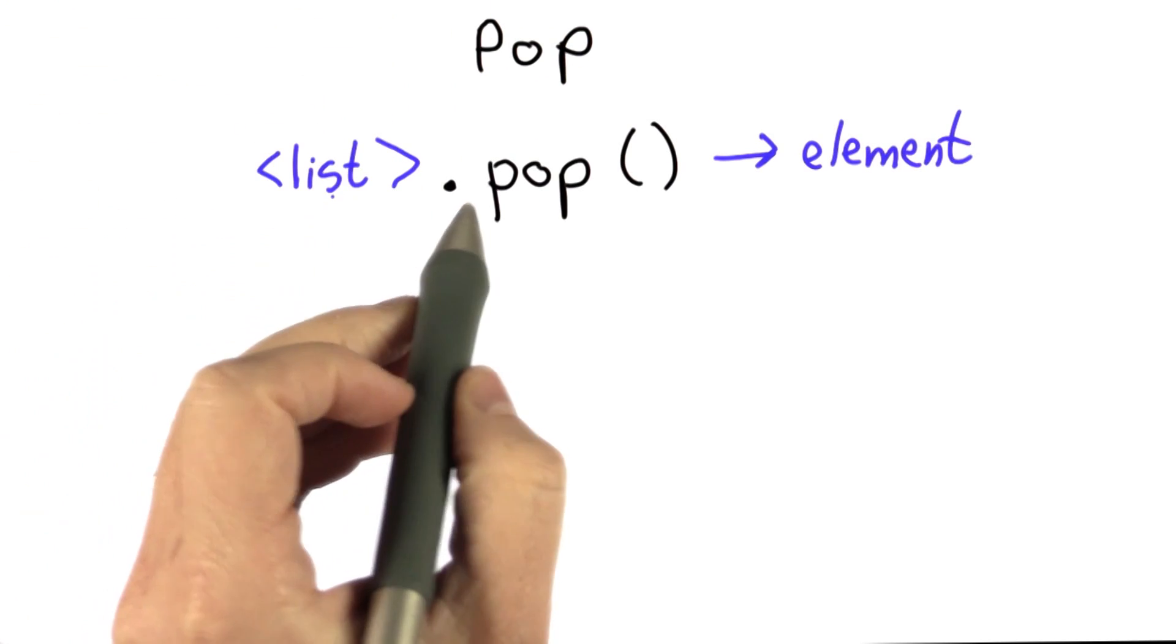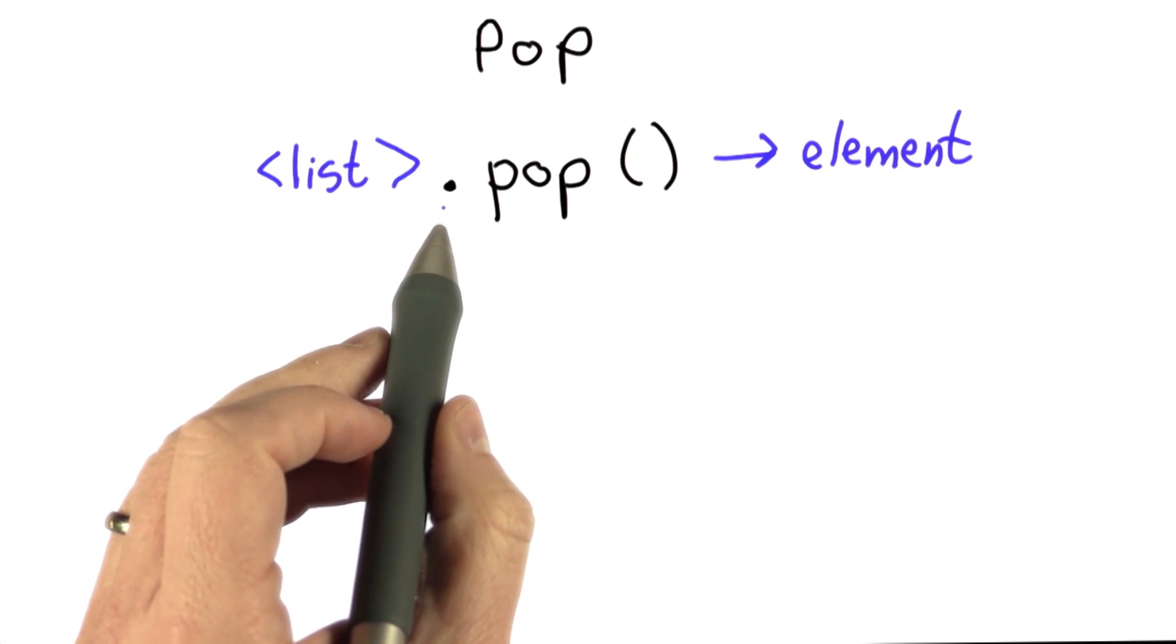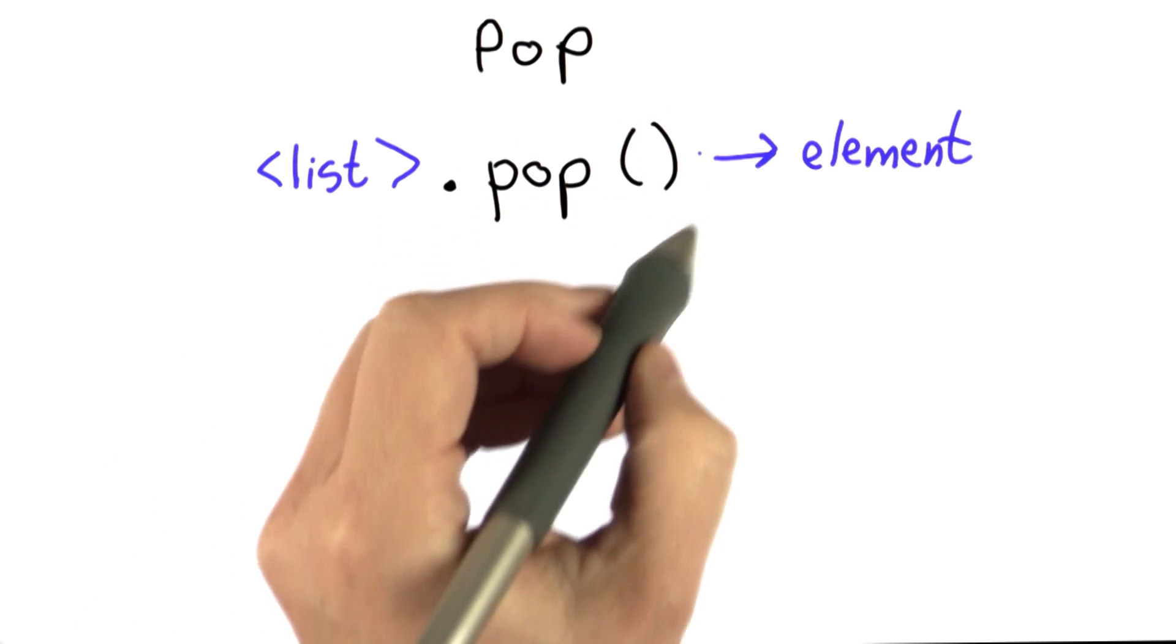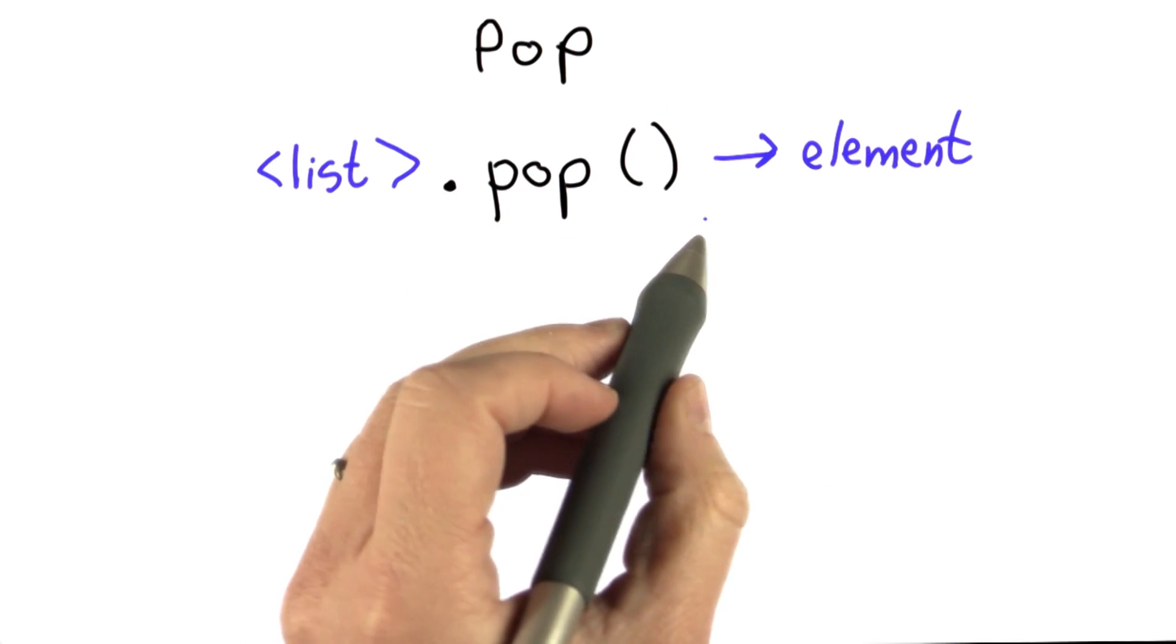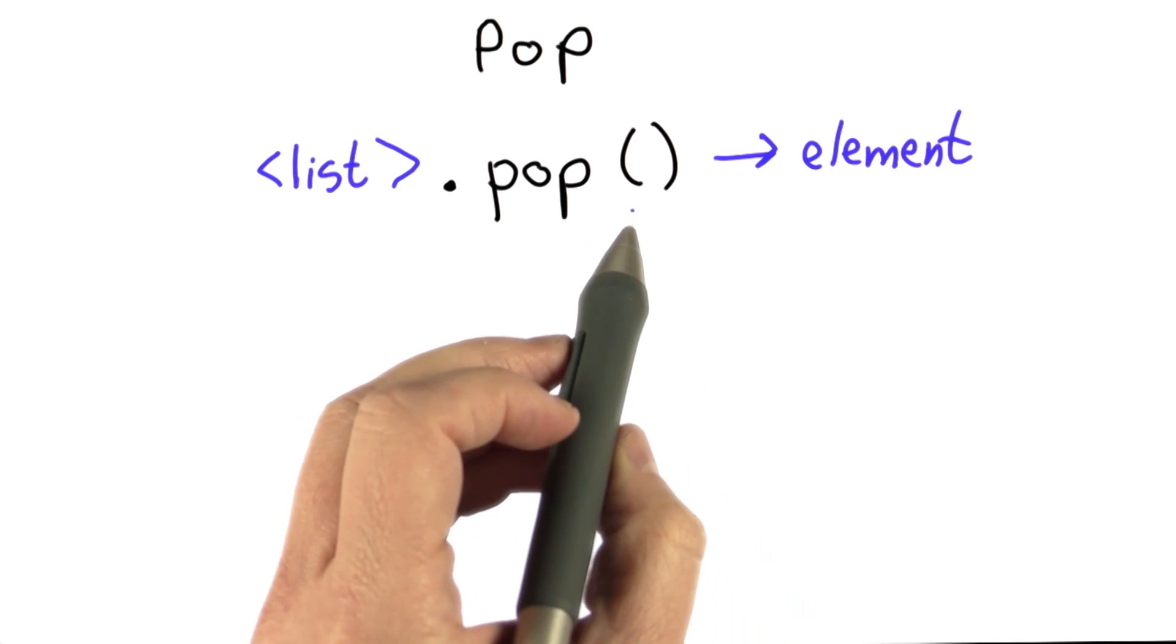Pop works like this. We have a list, we have .pop. This is similar to the way we use the find method. There are no inputs to pop, but we still need the parentheses to show that we're calling a procedure.